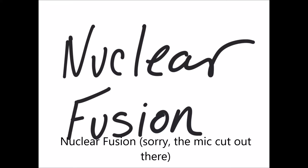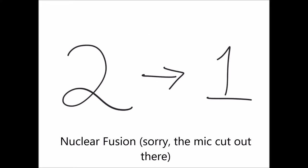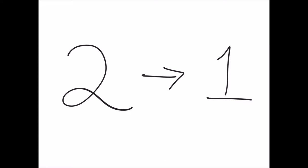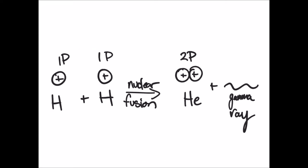Stars are giant balls of luminous gas. Stars produce energy throughout their life cycle by nuclear fusion. Nuclear fusion is the fusing together of two lower atomic number atoms to produce one higher atomic number atom. If we were to fuse together two hydrogen nuclei, we would produce one helium nuclei and a gamma ray.